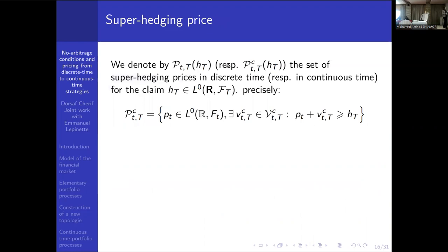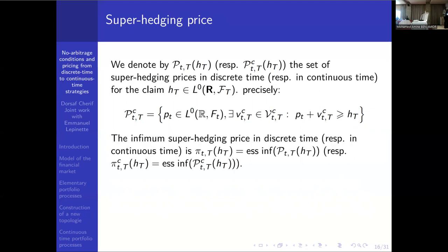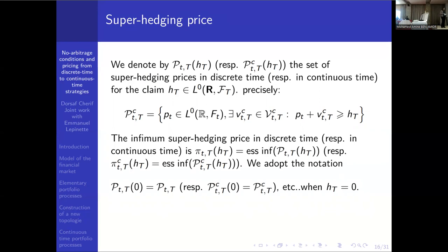We also consider the prices for a super hedgeable claim. A price for a claim H at time t is an initial capital that allows me to choose a strategy and add a portfolio so that I can super replicate the claim. Naturally, we are interested in the minimum capital from which I can begin an investment and obtain what I want — the infimum of the set of prices.